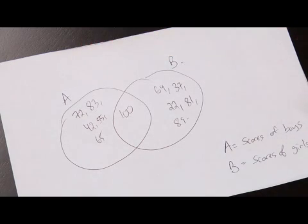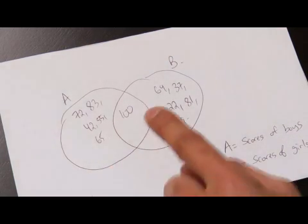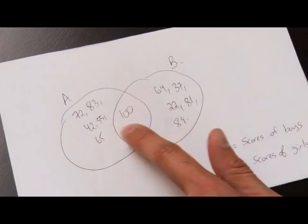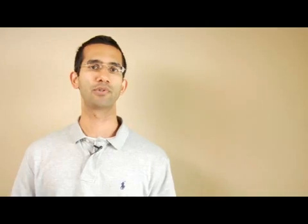This shows us the Venn diagram will show us the set of numbers for boys and the set of numbers for girls along with what both parties have in common. Now we're able to understand the definition of set along with an example that I've provided to help you understand how sets are viewed using a Venn diagram.